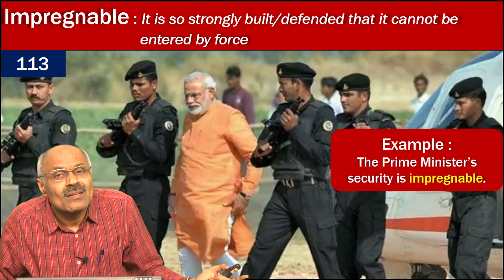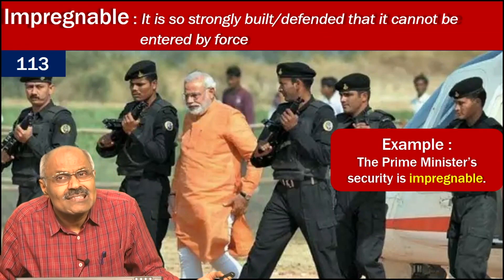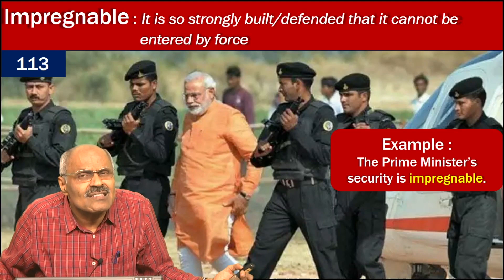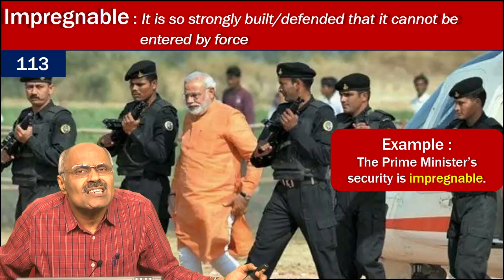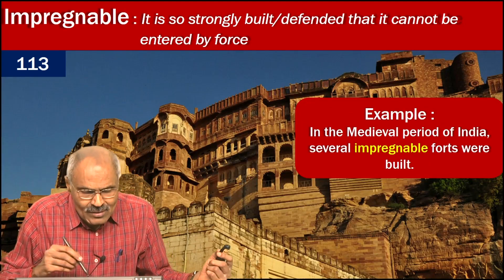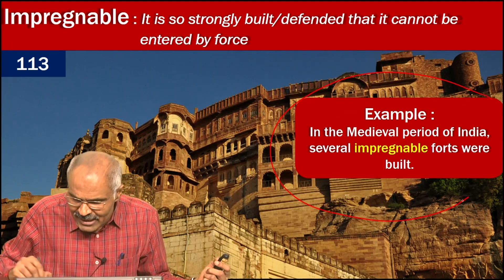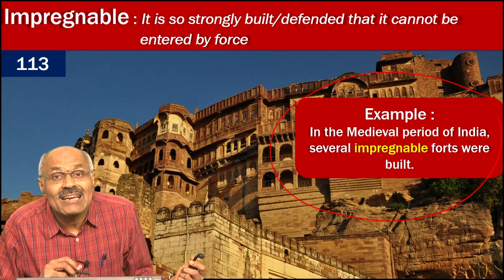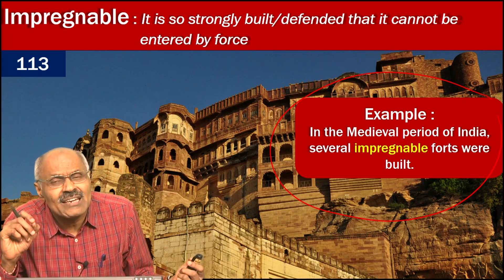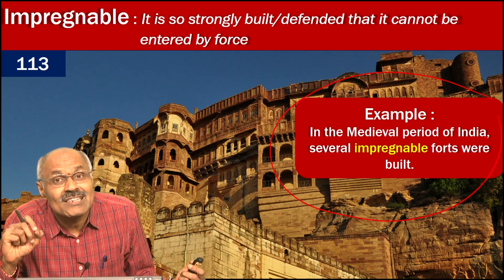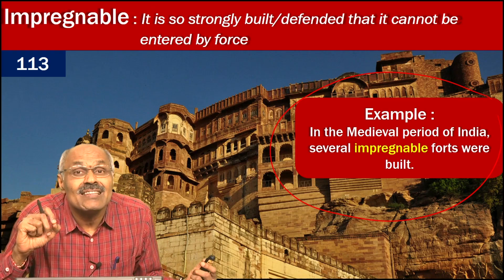The final word is 'impregnable.' The Prime Minister's security is impregnable — meaning it is just like a fort. In the medieval period of India, several impregnable forts existed. It is very, very difficult to attack a person by reaching inside such a fort. Impregnable means impossible to break into or overcome.